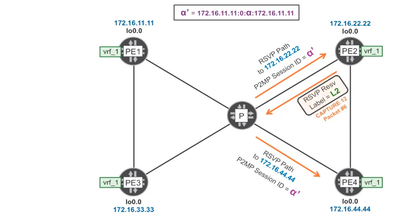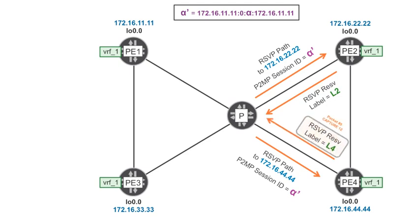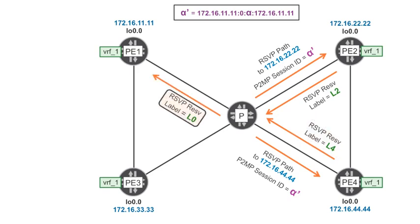These two alpha values are identical, and that's how PE2 can map the RSVP tunnel to the actual service it belongs to — multicast traffic coming from PE1 in the context of VRF1. PE2 advertises label L2 locally mapped to VRF1, and PE4 advertises label L4 locally mapped to VRF1. There is one more magic bit related to alpha: the transit router P realizes that these two sub-LSPs are actually part of the same point-to-multipoint LSP, alpha, and allocates a single label L0 to both of them.